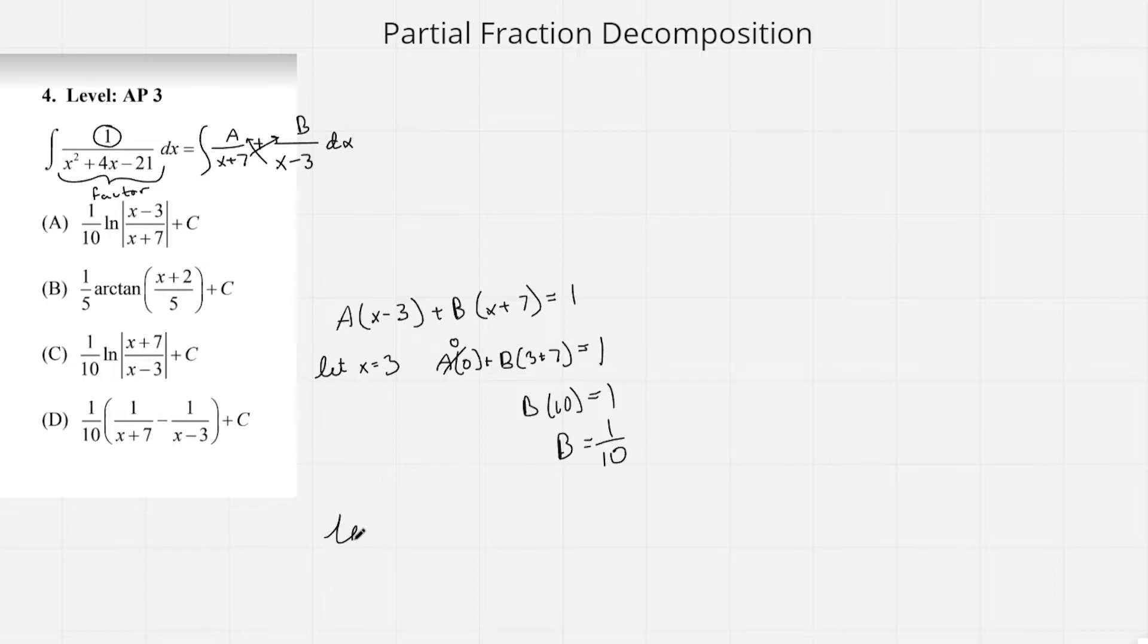And then we do the same thing to find A. This time we're going to do x equals negative 7. So A times (negative 7 minus 3) plus B times 0, so that's going to be 0. Negative 7 minus 3 is negative 10, which is going to equal 1, and A is going to equal negative 1 over 10.